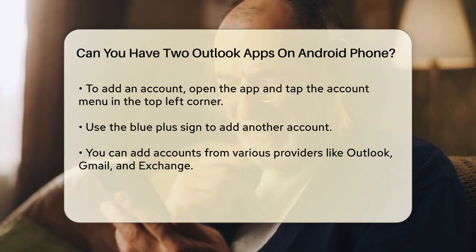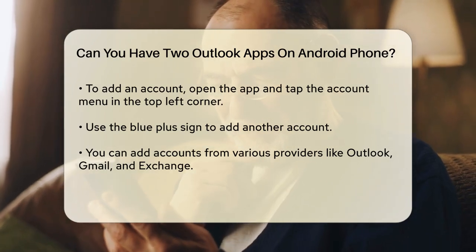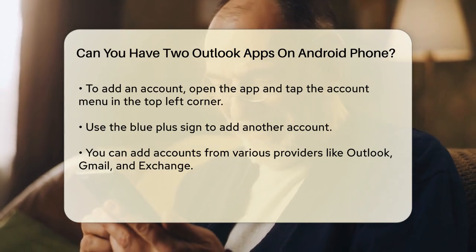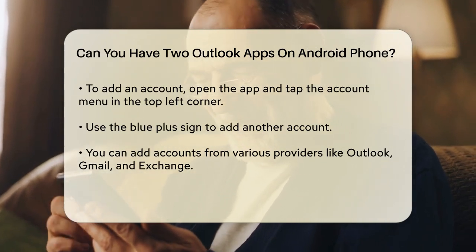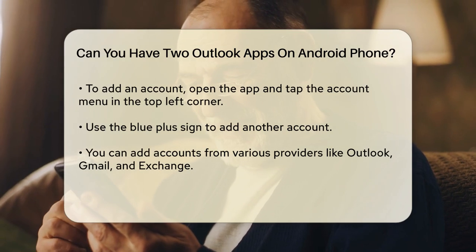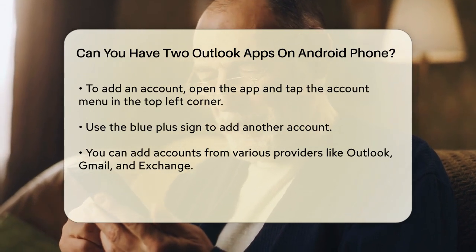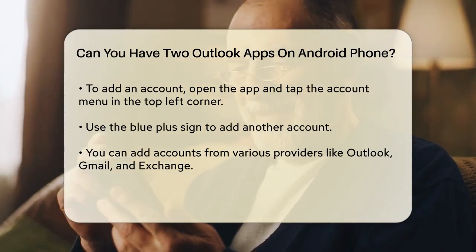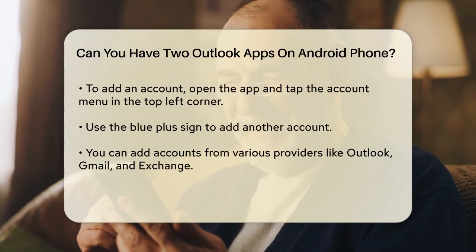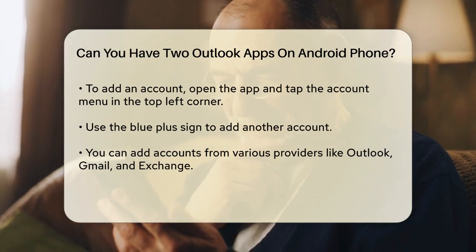To add multiple accounts, you simply need to open the Outlook app, tap the account menu in the top left corner, and select the blue plus sign to add another account. You can add accounts from various providers like Outlook, Gmail, Exchange, or even create a new account directly through the app.